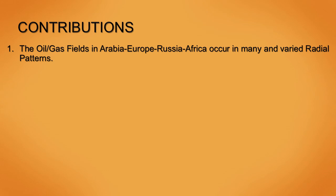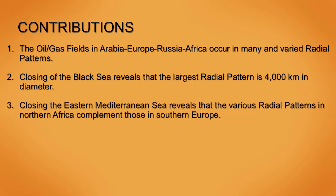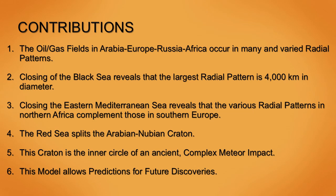Contributions: 1. The oil and gas fields in Arabia, Europe, Russia, and Africa occur in many and varied radial patterns. 2. Closing the Black Sea reveals that the largest radial pattern is 4,000 kilometers in diameter. 3. Closing the Eastern Mediterranean Sea reveals that the various radial patterns in northern Africa complement those in southern Europe. 4. The Red Sea splits the Arabian-Nubian craton. 5. This craton is the inner circle of an ancient complex meteor impact. 6. This model allows predictions for future discoveries.